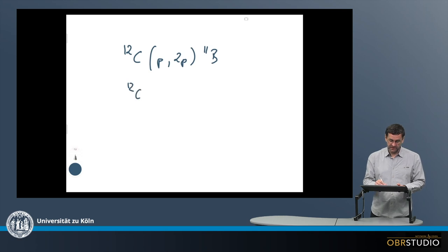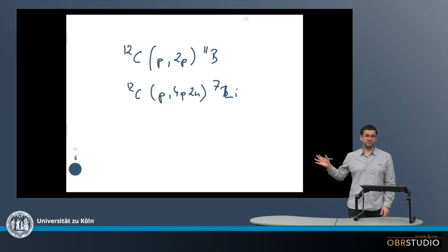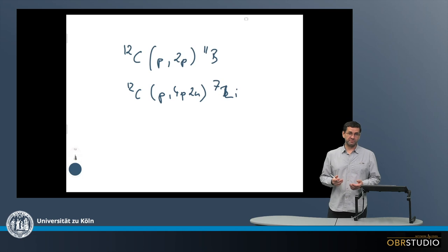A second spallation reaction is 12-carbon is hit again by a proton, but then four protons are released and two neutrons are released, and this then produces lithium-7. These are two of the examples how these elements can be produced by spallation.